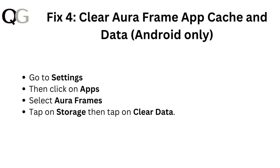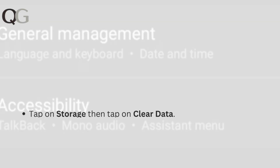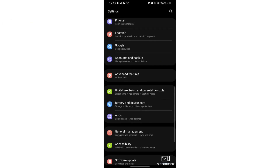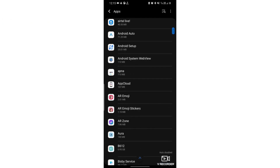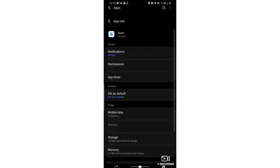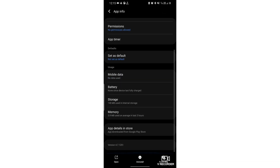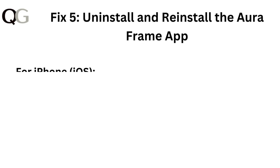Fix 4: Clear AuraFrame app cache and data. For Android only, go to Settings, then click on Apps, select AuraFrames, tap on Storage, then tap on Clear Data.